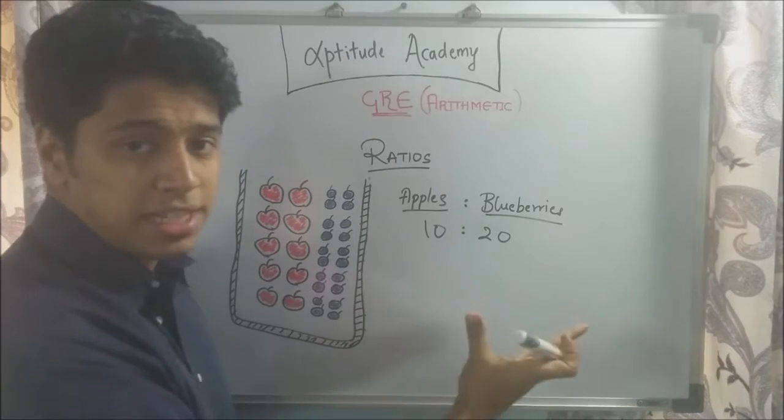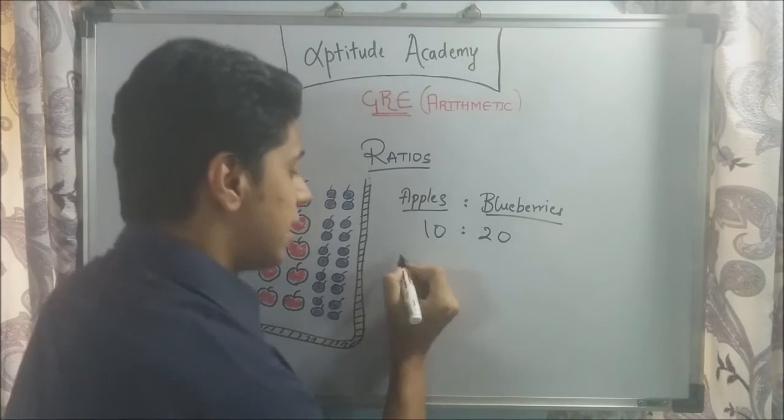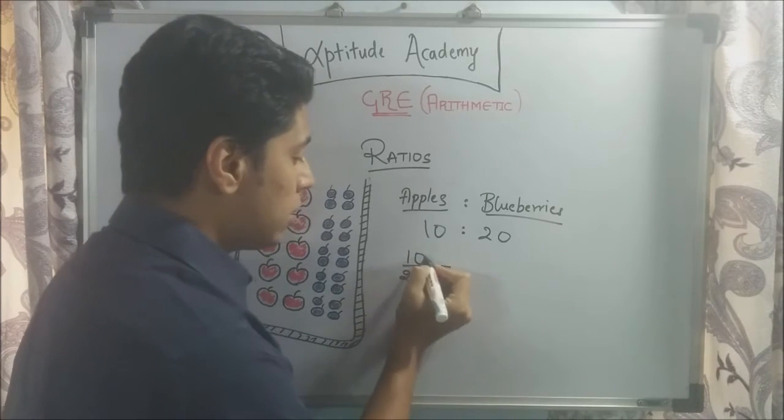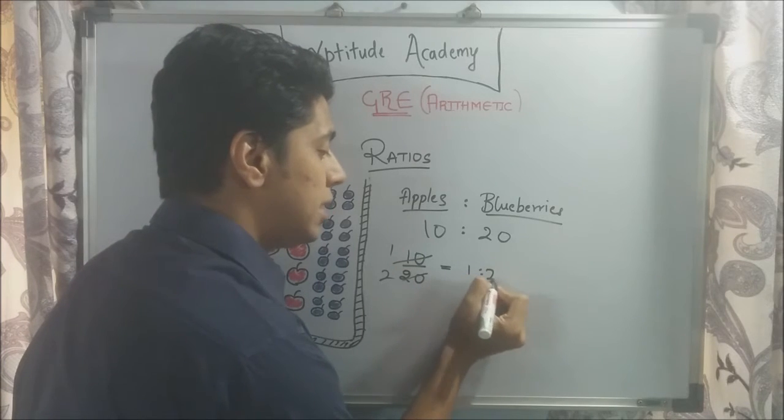Now what we can do is simplify the ratio by converting it to a fraction. So converting a ratio into a fraction, you just write it as 10 over 20. Now this is equal to what? 10 ones are 1, 10 twos are 2. So 1 is to 2 is the simplified ratio.